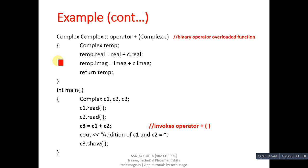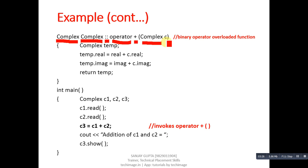The third function is operator+. Its return type is Complex, followed by the class name, scope resolution operator, the 'operator' keyword, and the plus symbol. It receives an explicit argument 'Complex c' from main. Inside, a temporary object 'temp' is created. 'temp.real' is assigned real + c.real, and 'temp.imaginary' is assigned imaginary + c.imaginary. The return statement returns the temp object.